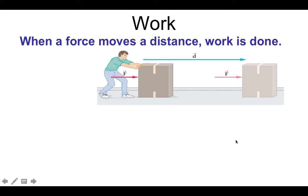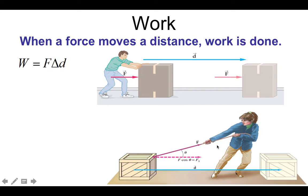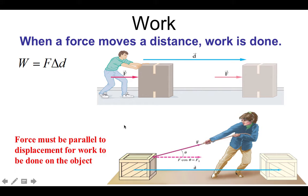For a simple scenario, our equation is just work equals force times distance. But when we're pulling at an angle, we only care about the force that is parallel to the distance or displacement that the object moves. So our equation becomes work equals force times distance times cosine theta, or F cosine theta times D.